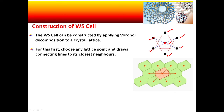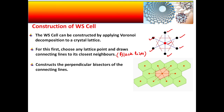After you connect all the lines — because there are six neighboring lattice points, you draw six connecting lines. After drawing these lines, you go for constructing the perpendicular bisector of each connecting line. In this figure, the red lines are the perpendicular bisectors.